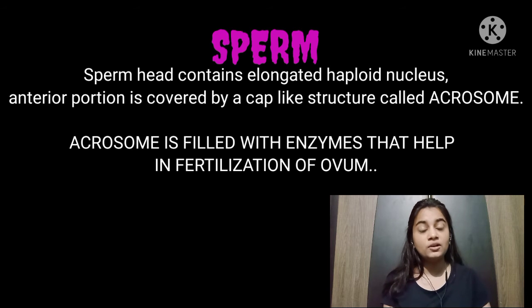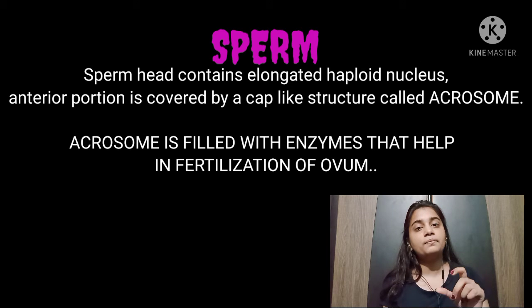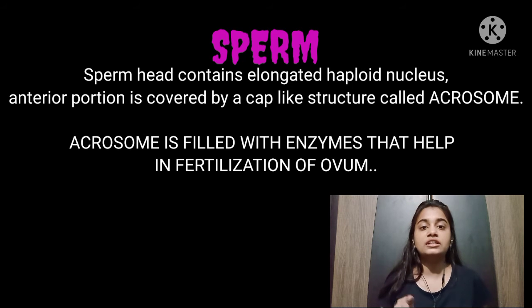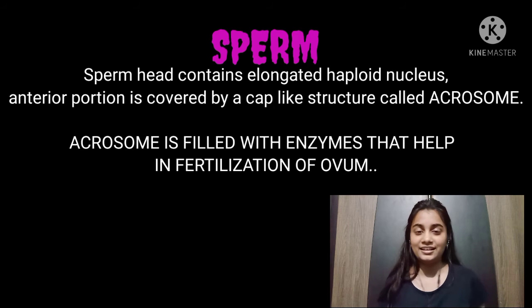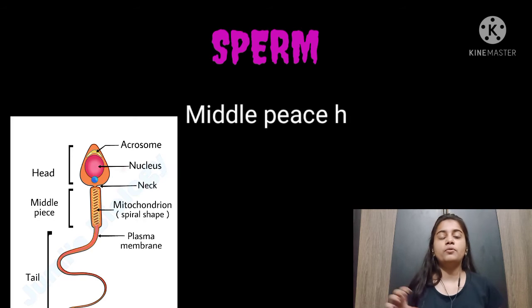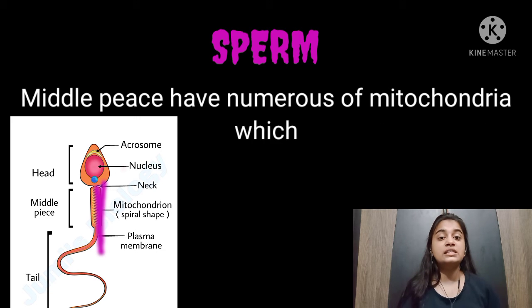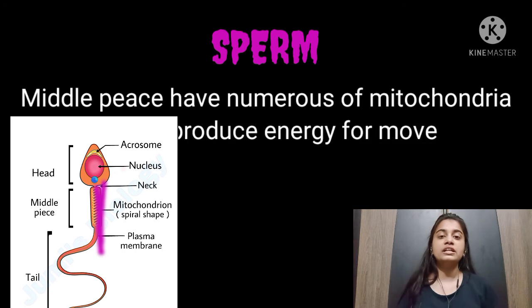So in the sperm head there is an elongated nucleus which is haploid with n number of chromosomes. Now let's talk about the middle piece. In the middle piece there are numerous mitochondria which are spirally arranged.